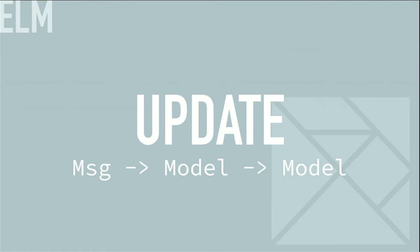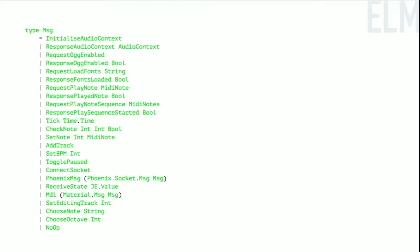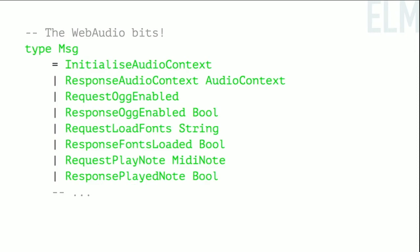You can think of your application as constantly folding or reducing over incoming events through this update function using the initial model as the initial state. Or if you know Elixir, messages are like a gen_server cast and update is like the handle_cast function. What kind of things happen in our app? This is the whole list — it's big and flat and seems overwhelming. I'll break it out into smaller pieces. The web audio bit is a piece I cribbed from an existing open source project to handle initial web audio setup.